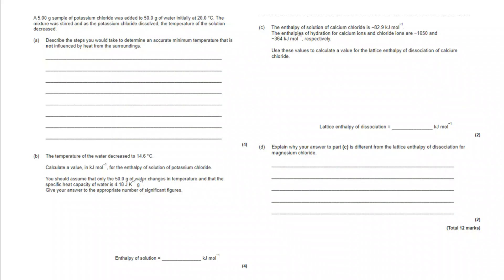So we have got here 5 grams of potassium chloride added to 50 grams of water initially at 20 degrees Celsius. The mixture was stirred, potassium chloride dissolved, temperature of the solution decreased. What steps would you take to determine an accurate minimum temperature not influenced by heat from the surroundings?